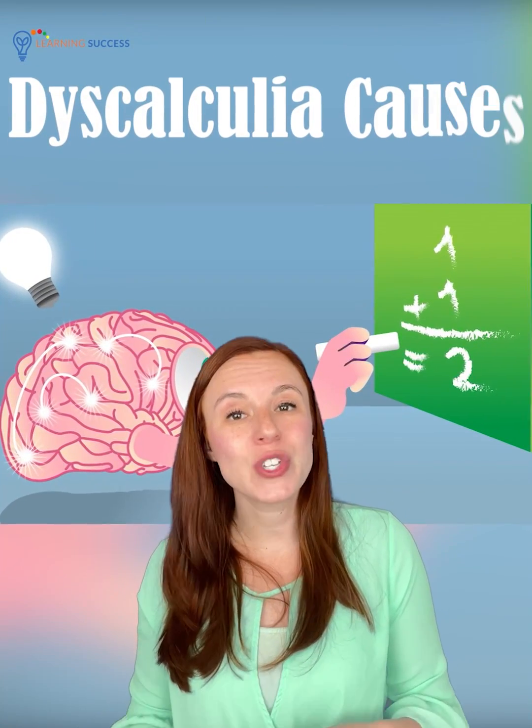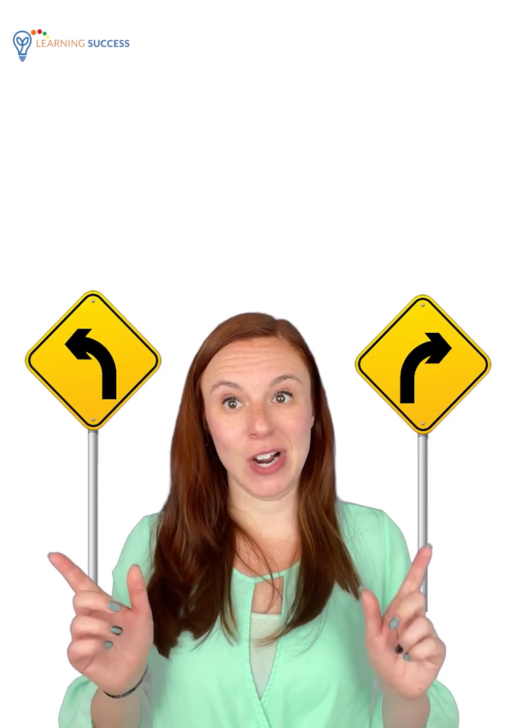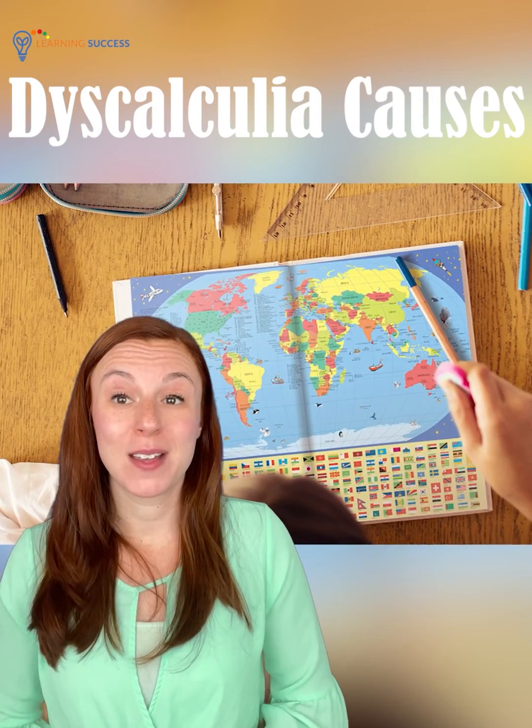Those with dyscalculia will also often have problems with spatial reasoning. Things like left and right, or over and under. They may have problems reading maps, but nowadays we all use navigation, so that might not get noticed.